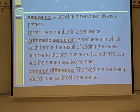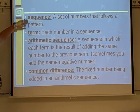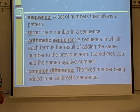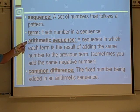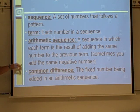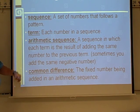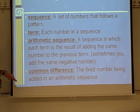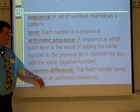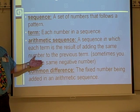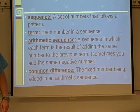Here's some vocabulary we're going to need. Sequence is a set of numbers that follows a pattern. Term is each number in a sequence. Arithmetic sequence is a sequence in which each term is a result of adding the same number to the previous term — sometimes a negative number, but it's always being added. Common difference is the fixed number being added in an arithmetic sequence; whatever value you're adding each time, that's the common difference.